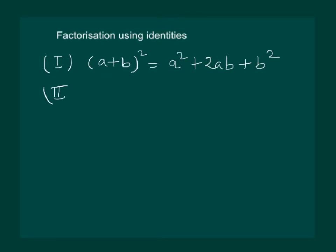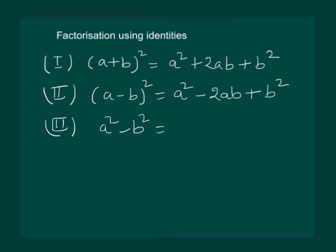Second identity is a minus b whole square is equal to a square minus 2ab plus b square. Third identity is a square minus b square is equal to a plus b into a minus b.